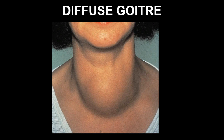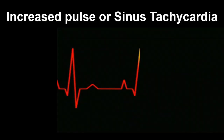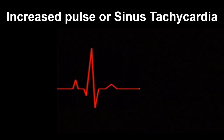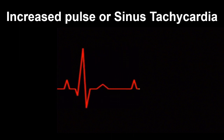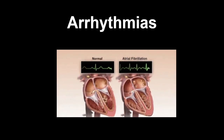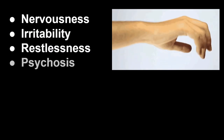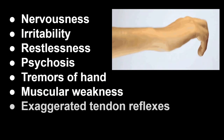In toxic nodular goiter, various nodules — multi-nodules — are seen, but in Graves' disease, there is diffuse goiter, which refers to swelling of the thyroid gland. Various cardiovascular features are seen: increased pulse rate or sinus tachycardia due to the increased BMR, and arrhythmia — especially atrial fibrillation. Neuromuscular features include nervousness, irritability, restlessness, psychosis, tremors of hand, muscular weakness, and exaggerated tendon reflexes.